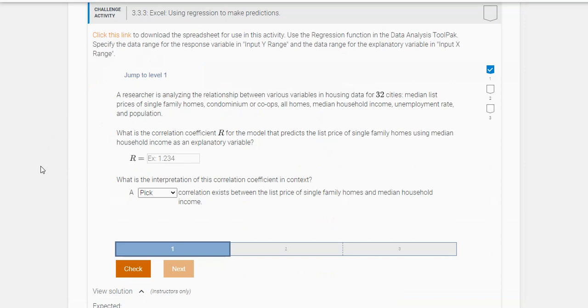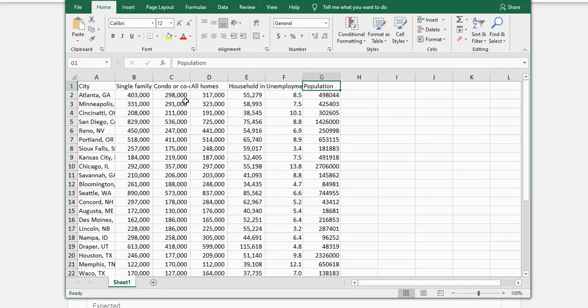A researcher is interested in analyzing the relationship between various variables in housing data for 32 cities. The first question is, what is the correlation coefficient R for the model that predicts the list price of single family homes—that's my Y variable—using median household income as the explanatory variable. So the first thing we want is R.